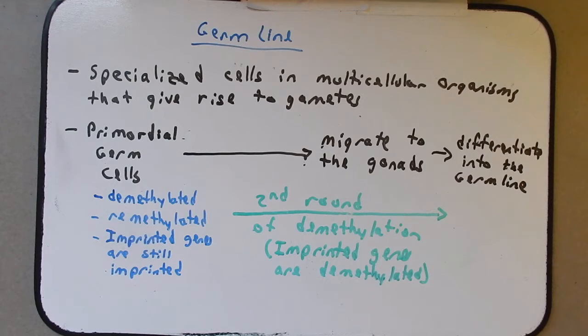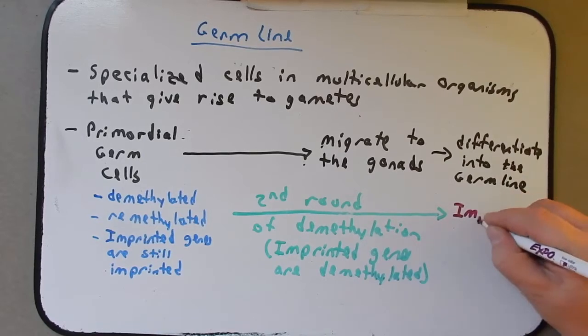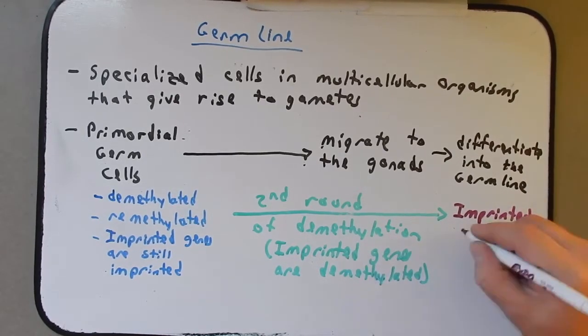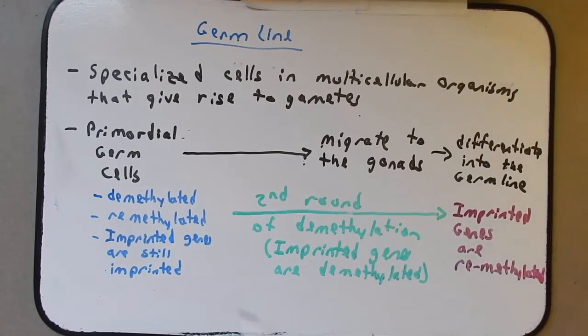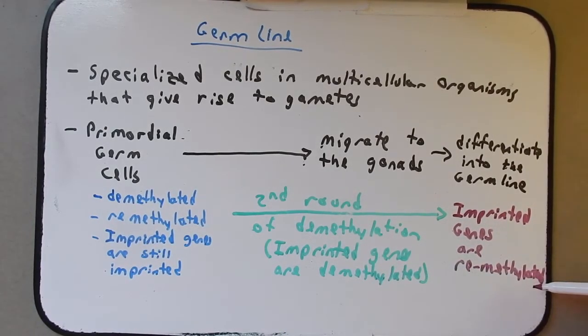So, by the time the primordial germ cells have reached the gonads and begun to differentiate, the DNA has been demethylated. Now, some remethylation occurs, but the main thing that gets remethylated here are the imprinted genes. Imprinted genes are remethylated, but not to the original state, but remethylated to match the sex of the individual. So, for the case of IGF-2, as we said before, if this individual were female, all the copies of IGF-2 in the germline would be imprinted, would be off. But, if they were male, they wouldn't be imprinted.